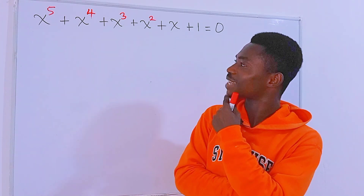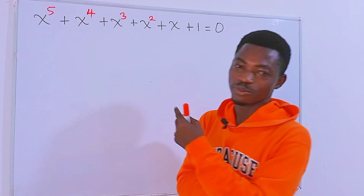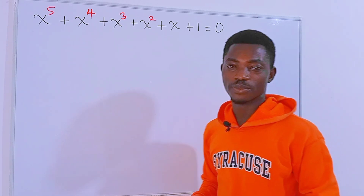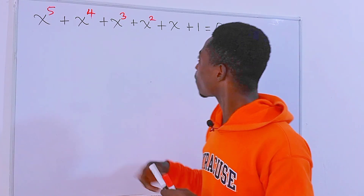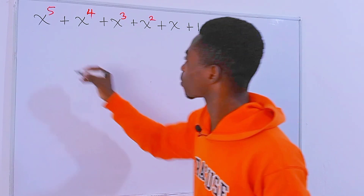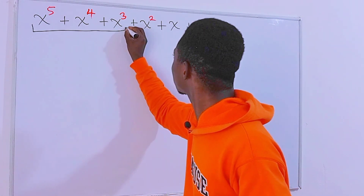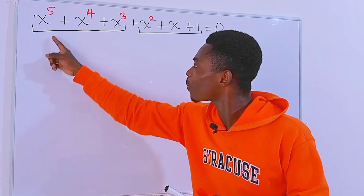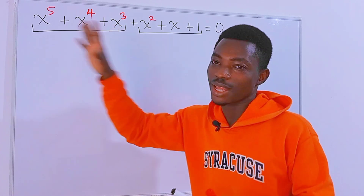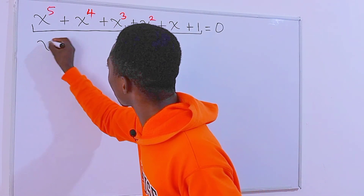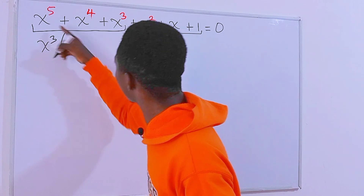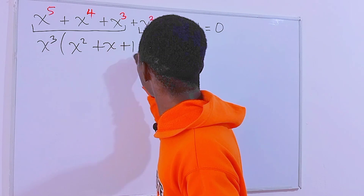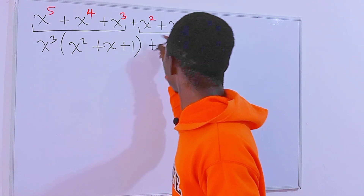The question looks a little bit scary, so how do we start? I'm going to group this into 2. I'm going to group these terms and then group these terms as well. The reason is that from the first group we can factor out x to the 3rd power. So we have x to the 3rd power times x to the 2nd power plus x plus 1.